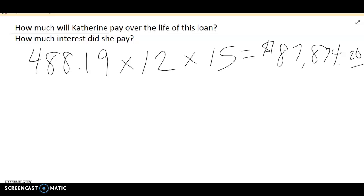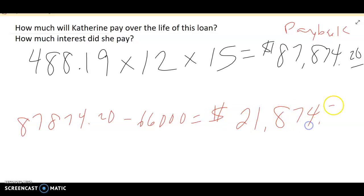And now I know what you're thinking. You're like, but she only borrowed $66,000. Yeah, I know. So this right here is payback. That means if I take 87,874.20, and I subtract the $66,000 she borrowed, that means the $21,874.20, the difference between her payback and what she borrowed is interest.